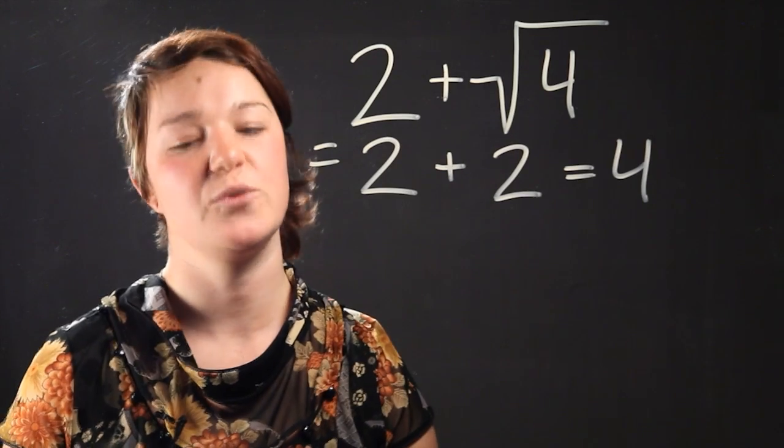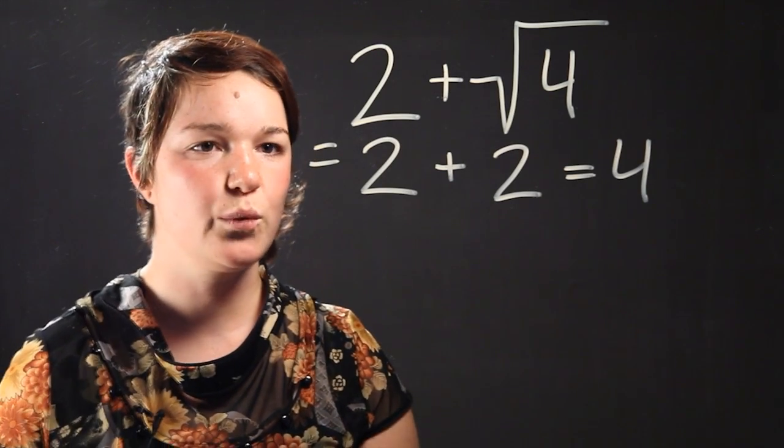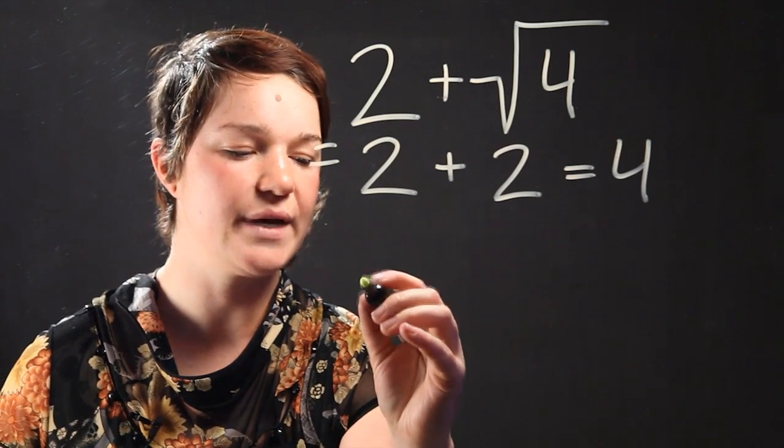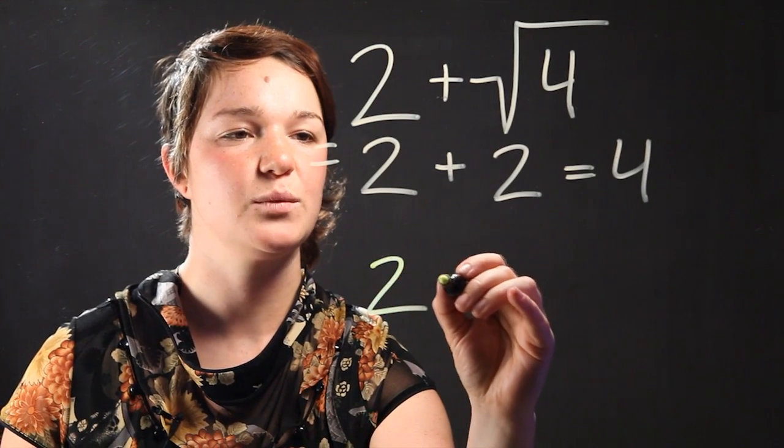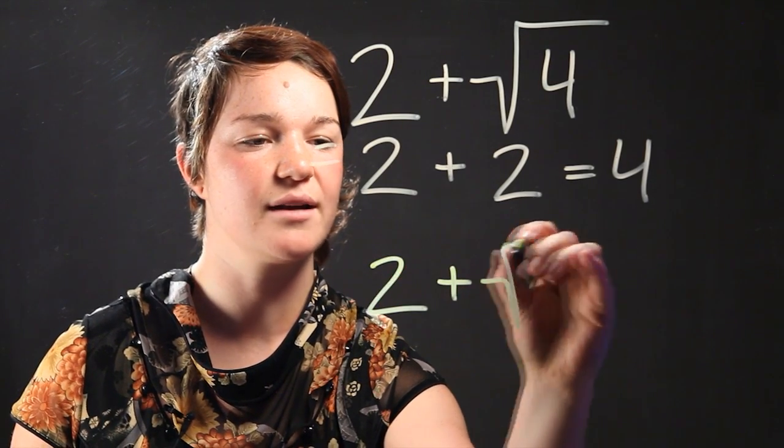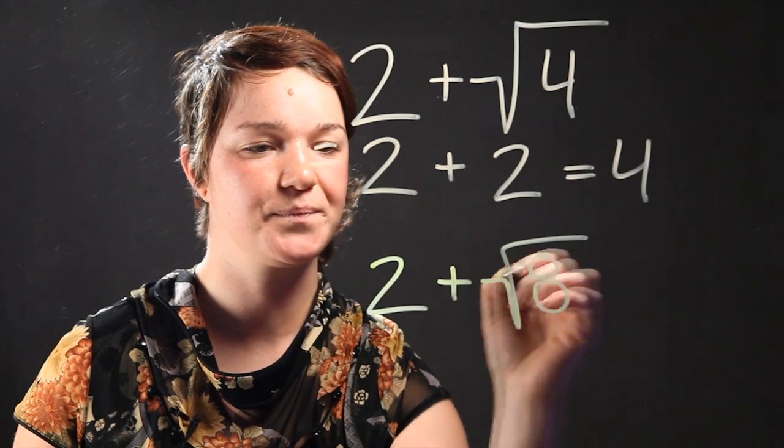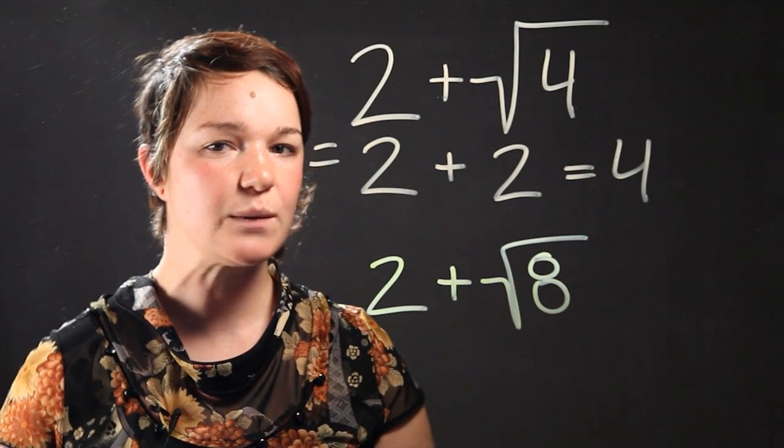But let's make it a little bit more difficult. For example, what if our whole number was once again 2, but we decided to add a radical like 8? Can we add those two together?